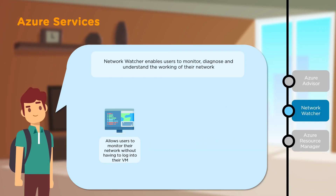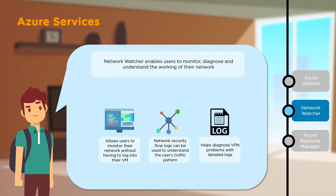Next, we have Network Watcher, which allows you to monitor, diagnose and understand the working of your network. You can monitor your network without having to log in to your virtual machine. You can also use network security flow logs to understand traffic patterns — how much traffic is coming in, how much is going out and more. It also helps diagnose VPN problems with detailed logs.